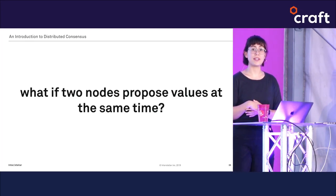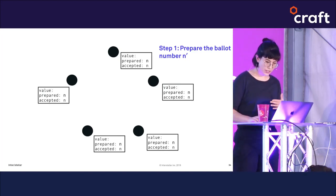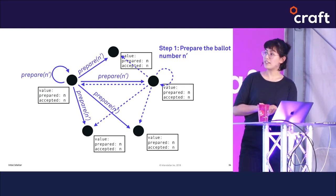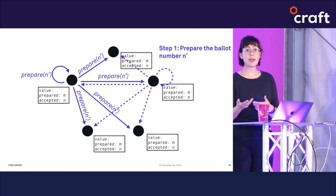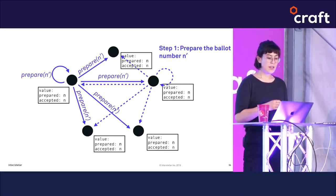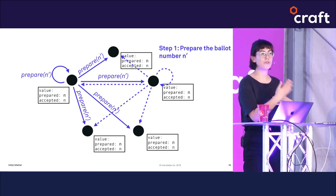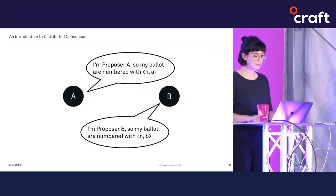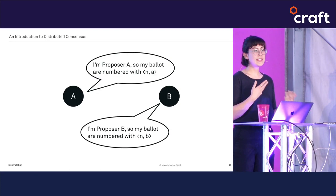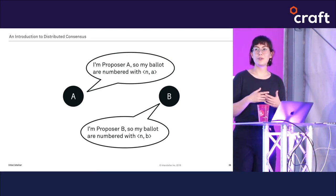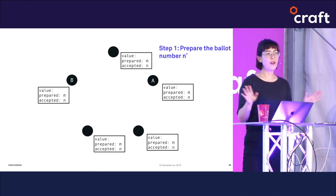As a more complex example, let's look at what happens if two nodes propose values at the same time. Both nodes send messages to prepare a ballot — the first proposer's messages are solid lines and the second proposer's are dotted lines. This is where ballot numbers come into play. In Paxos, ballot numbers are totally ordered, meaning for any two ballot numbers one must come before the other. This is usually done by making ballot numbers a tuple: a counter plus a unique node identifier.